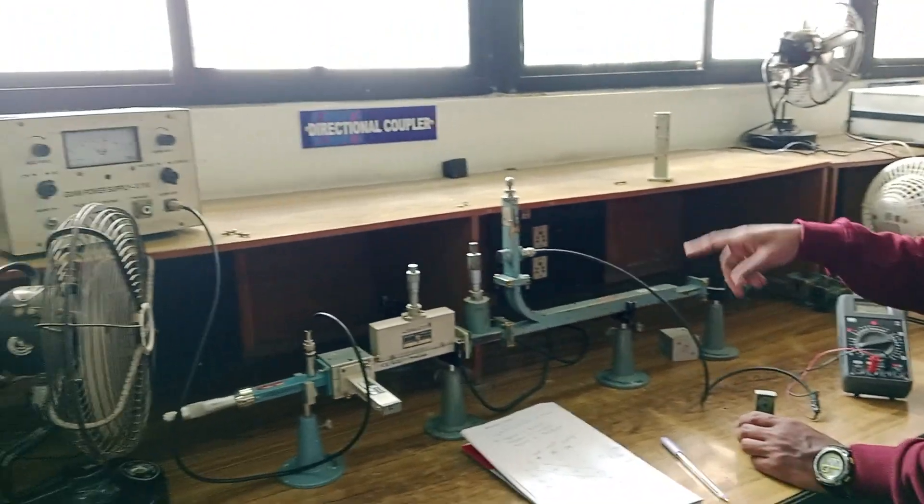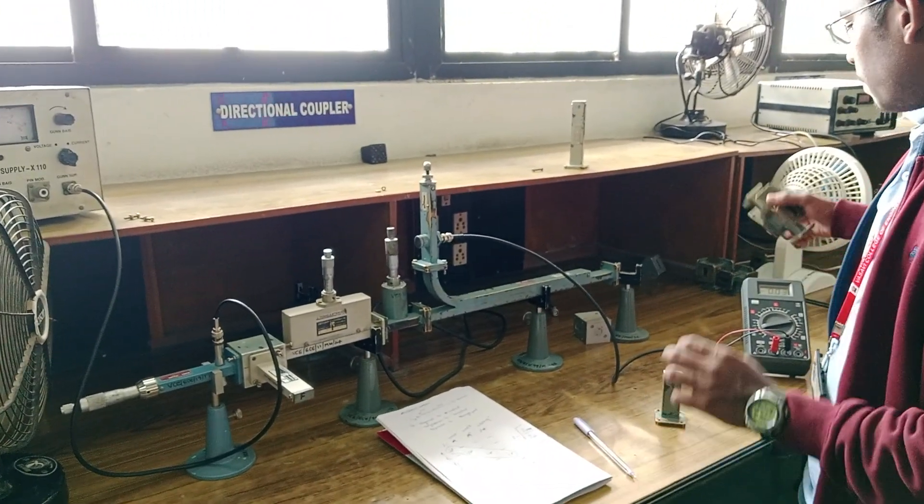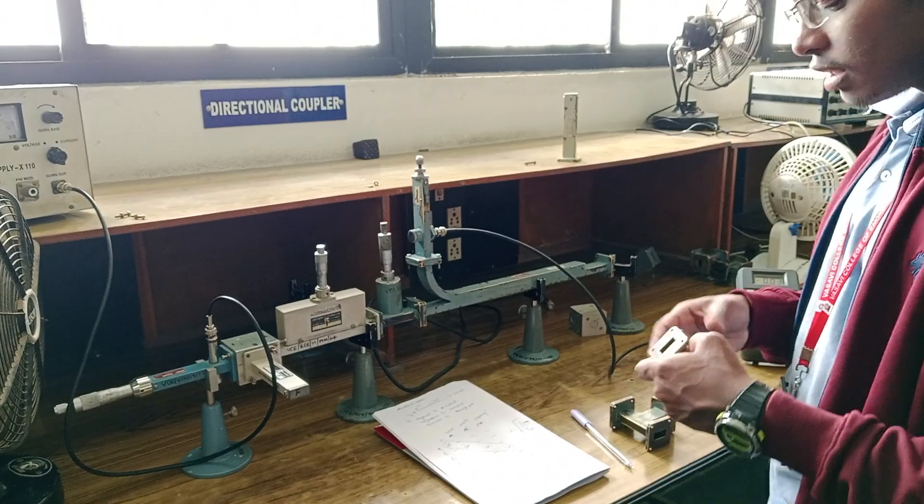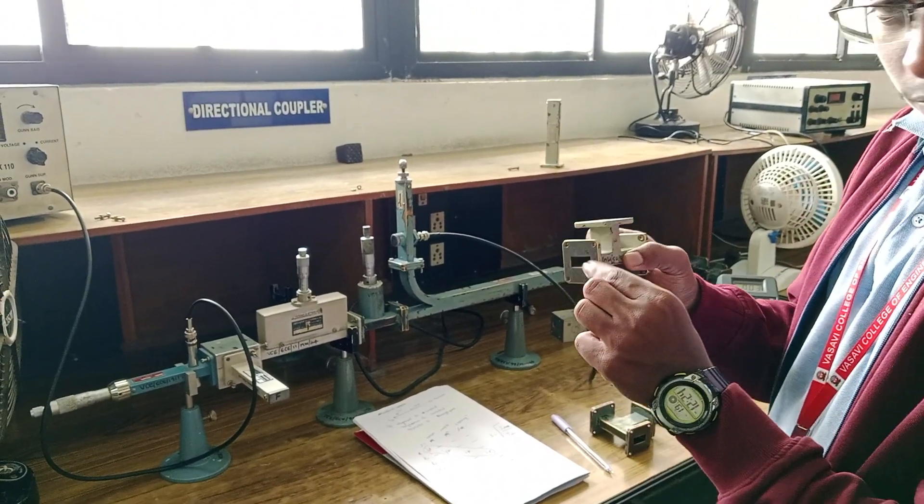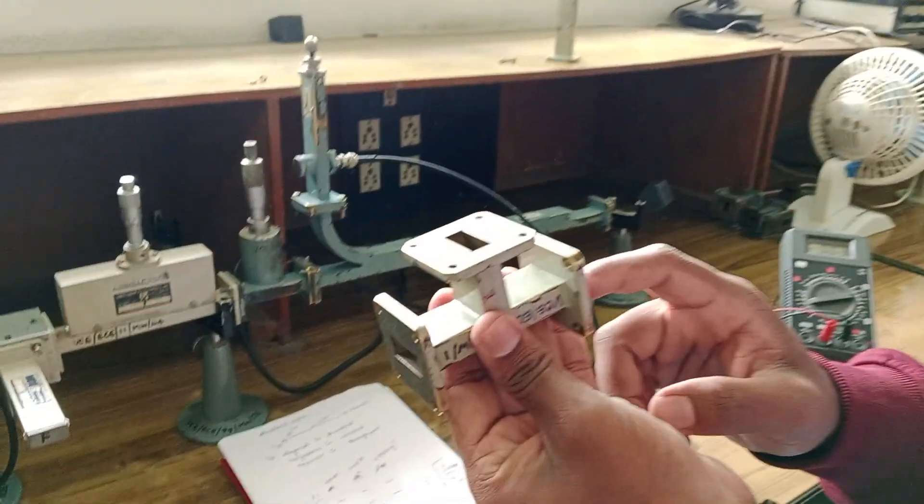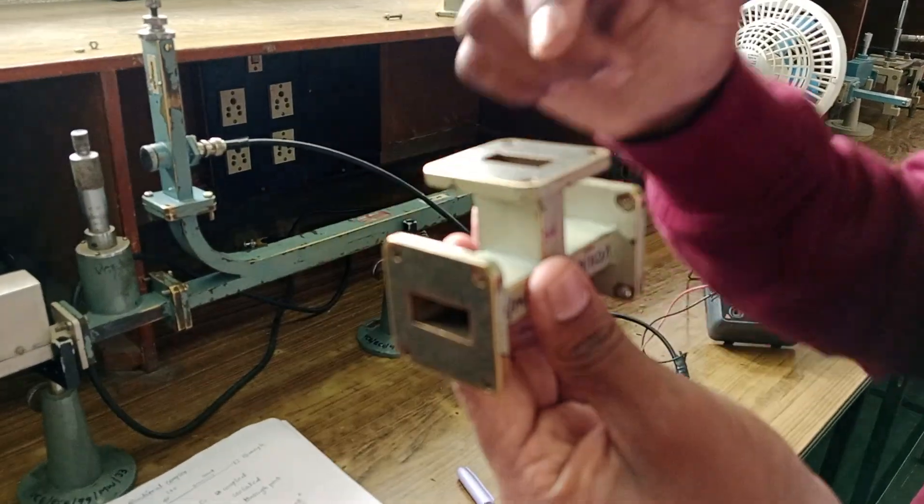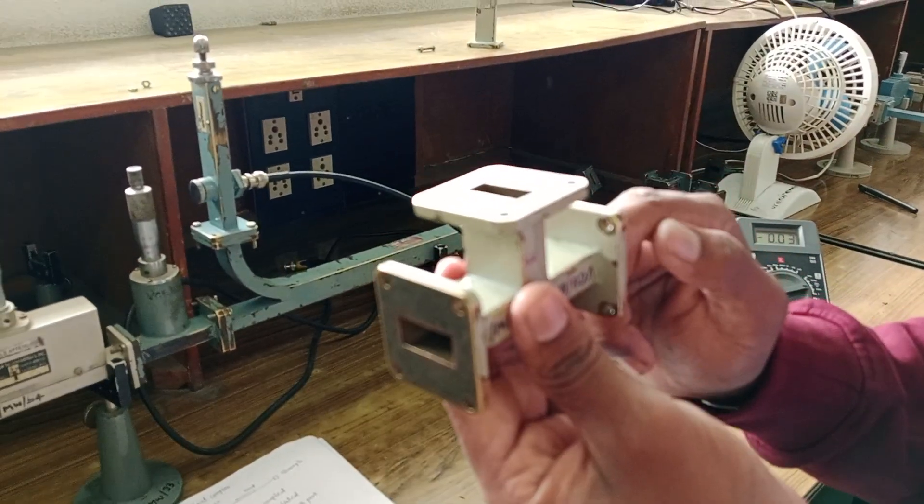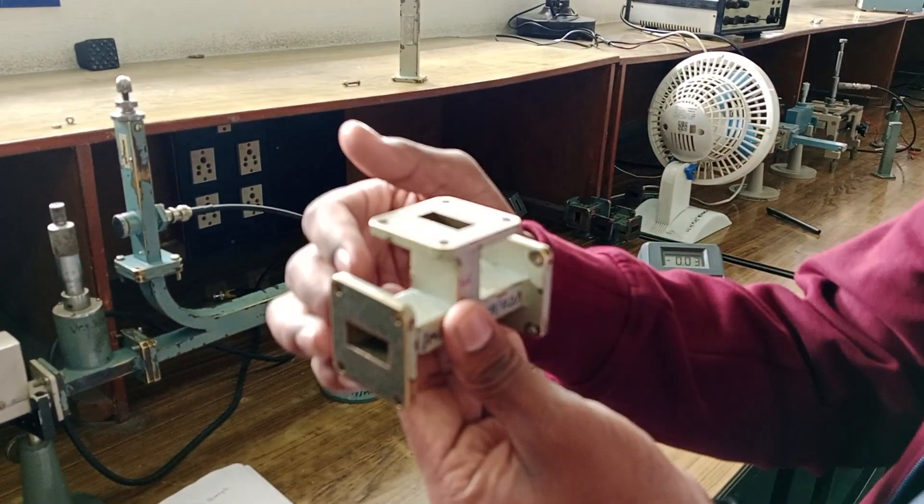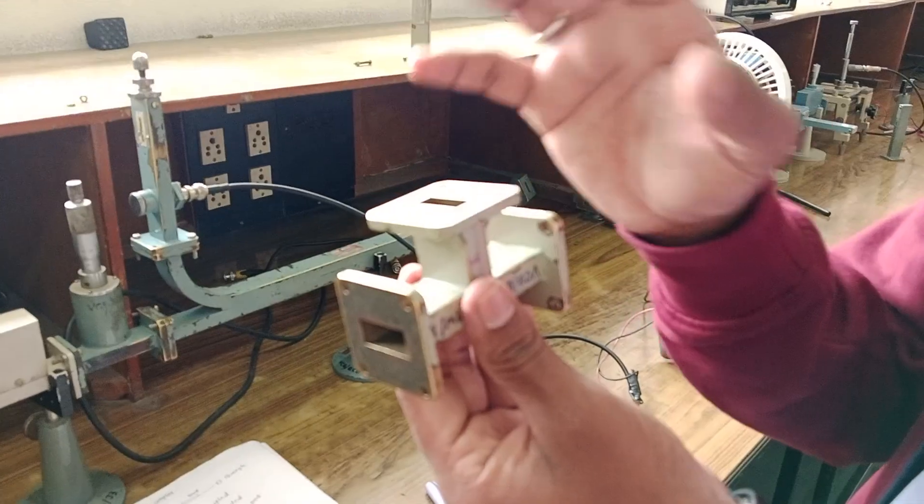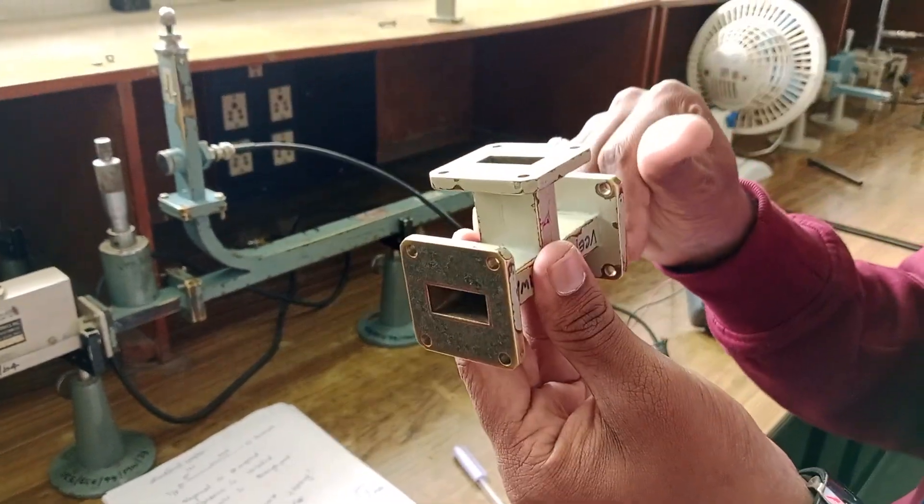In the same way, as we have 4 ports for directional coupler, for E-plane and H-plane and magic tee also the same thing happens. This will be the input port, this will be the output port, and this will be the another port. In 3 ports, you will be giving input here, taking output once here, output once here. You will be calculating S12, S21, S31. You need to get the 3 by 3 matrix.